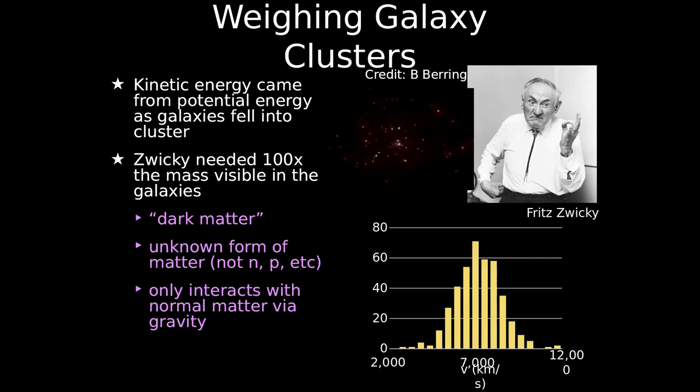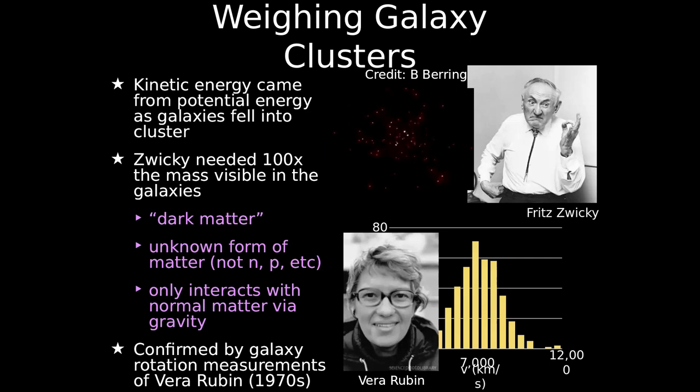This was also proved by Vera Rubin, who in the 1970s studied individual galaxies themselves and found the same thing. We know how much stars weigh and how much a galaxy is meant to weigh, but when you measure how fast it spins, it's spinning much faster. So there's something there — this dark matter halo — giving extra gravity because it has extra mass.